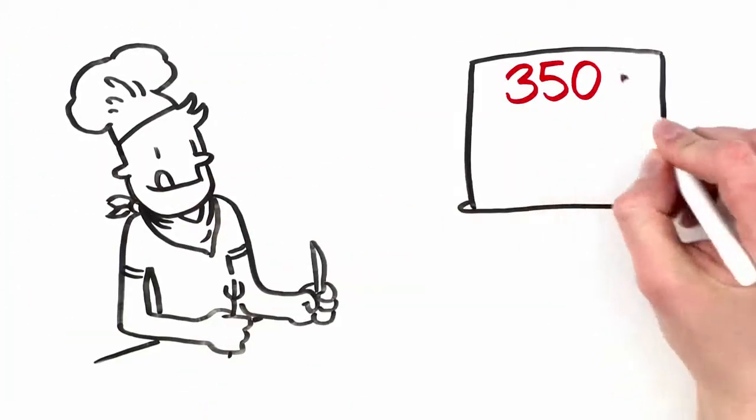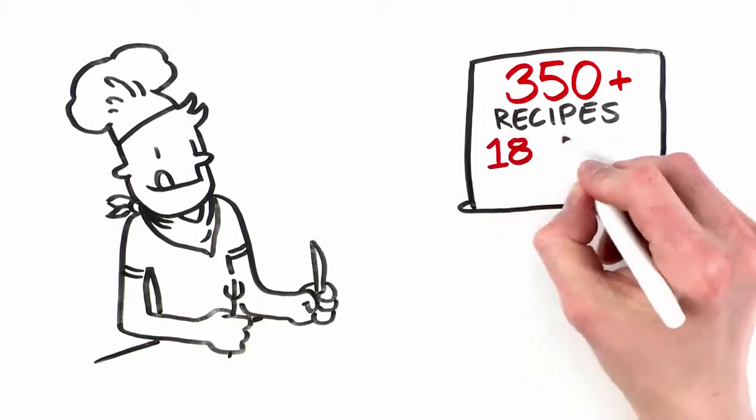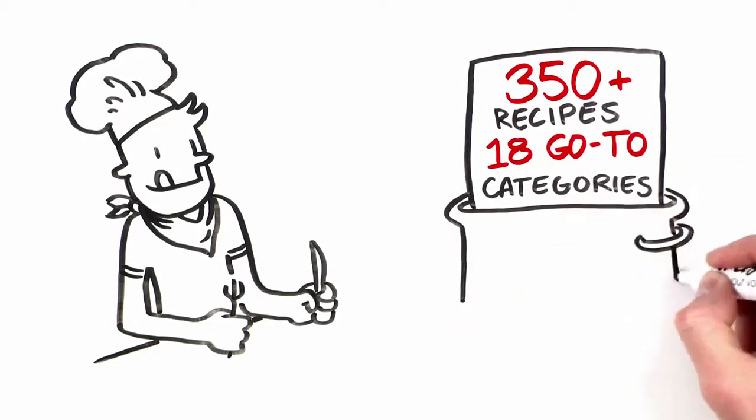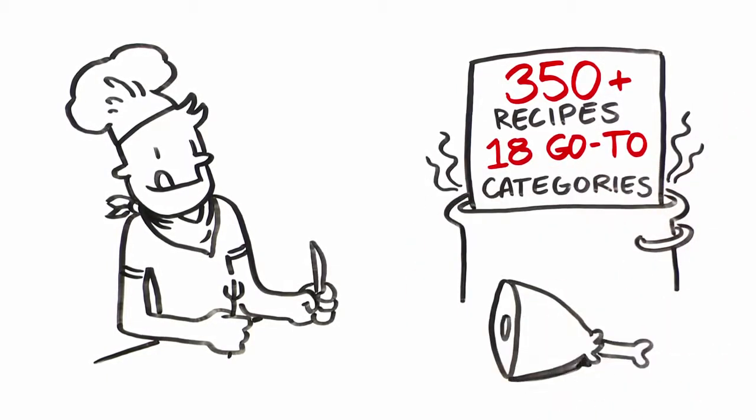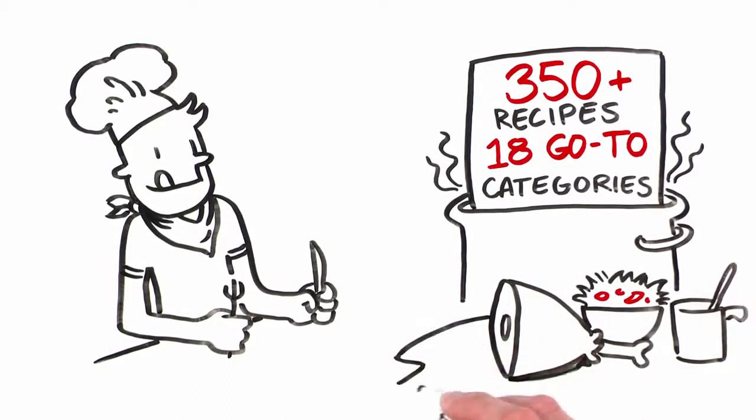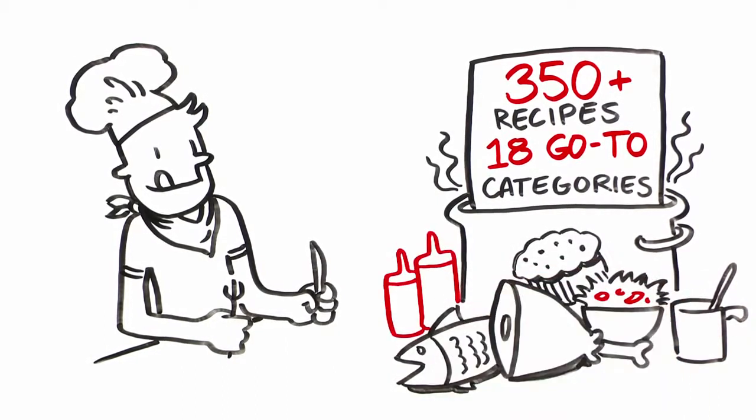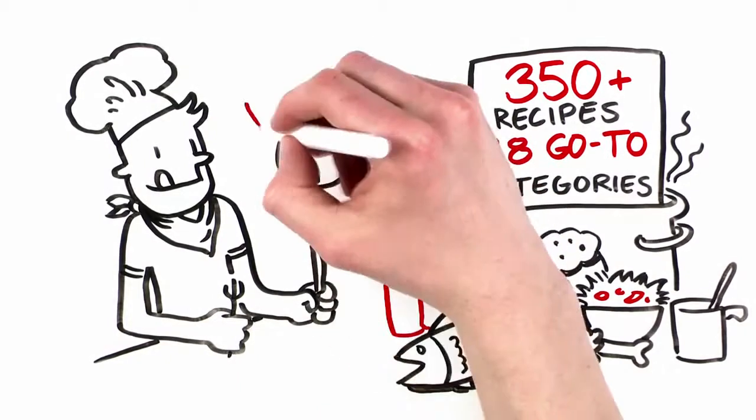You'll drool over the 350-plus recipes, neatly organized into 18 go-to categories. All kinds of meats, salads and snacks, stews and sides, seafood, breakfasts, sauces and condiments, and other dishes that will work no matter what time of day you're looking for something tasty.